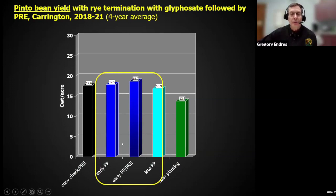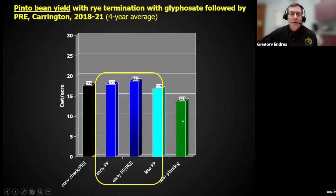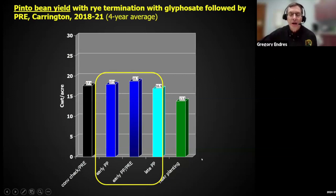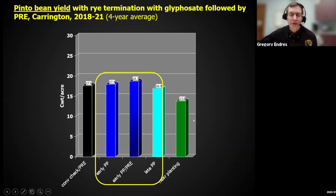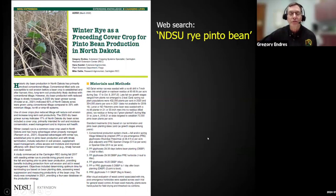When we delayed the termination of the rye until planting time — planting green — that was good for weed control and protecting the soil. But during the years of the study, we always had relatively dry springs, and the topsoil dried out with the rye growing up to planting time. That was detrimental for having a quick and adequate plant stand of the dry beans — we lost yield of at least 20% when we delayed the termination of rye to planting time. If you want details, we do have a publication on that.